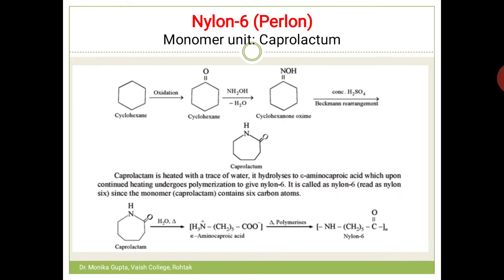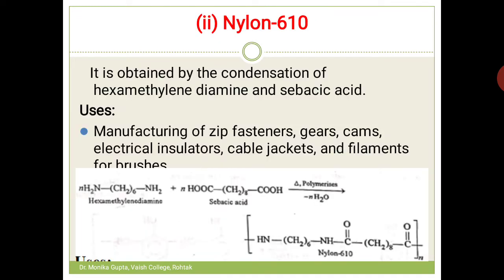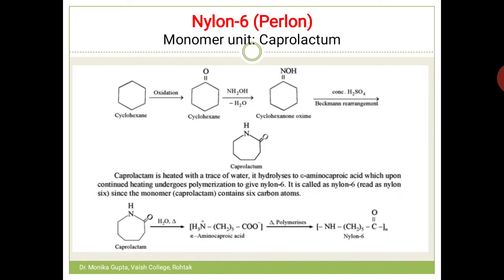The next is nylon 6. From the name itself you can tell there is only one monomer unit and it has 6 carbon atoms. The trade name of nylon 6 is Perlon.